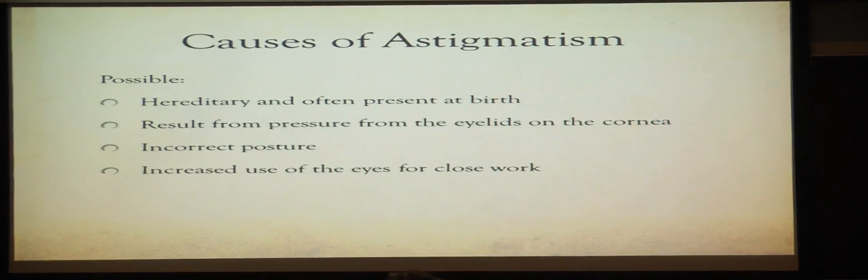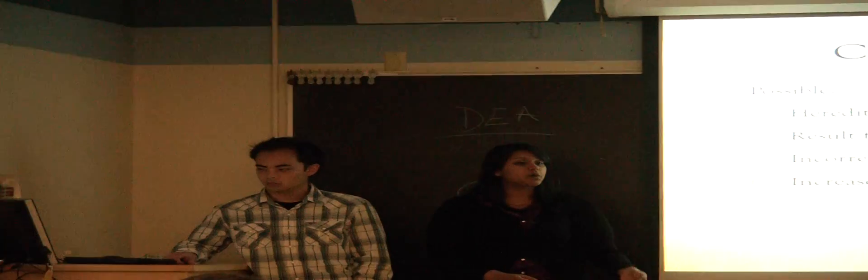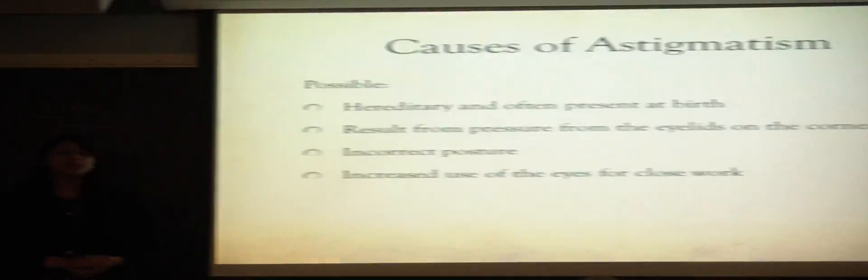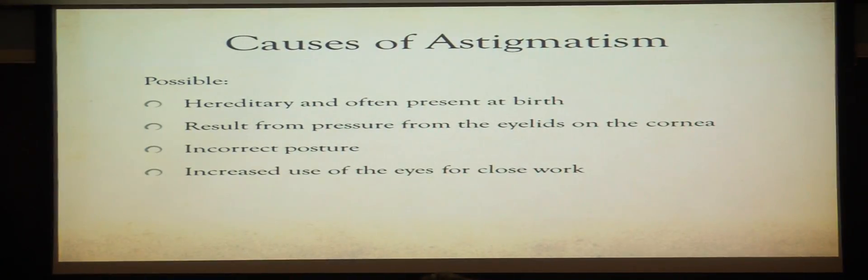Some causes of astigmatism is that they can either be present at birth, so they're hereditary, or they can be acquired later on in life from either too much pressure from the eyelid on the cornea, incorrect posture, or increasing use of the eyes for close work, such as using the computer too much or reading too close to your face.